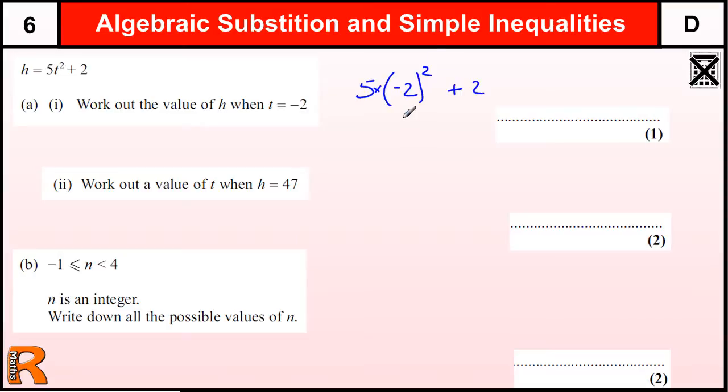Minus 2 squared is 4. Be careful with that, because minus 2 times minus 2, the minuses cancel each other out to leave you with 4. So we get 5 times 4, which is 20, plus 2, equals 22. So one mark.